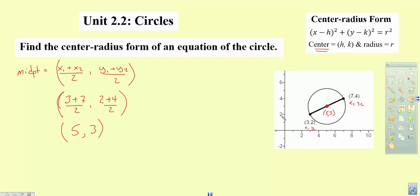And now we need to find our radius. Well, our radius would be the distance, the distance from our midpoint or excuse me, our center to a point on the circle. So we can either go from 5, 3 to 3, 2 or we can go from 5, 3 up to 7, 4, and either way though, we're going to use the distance formula.